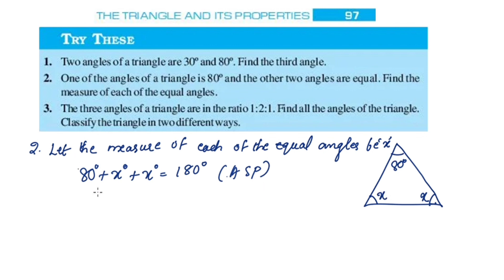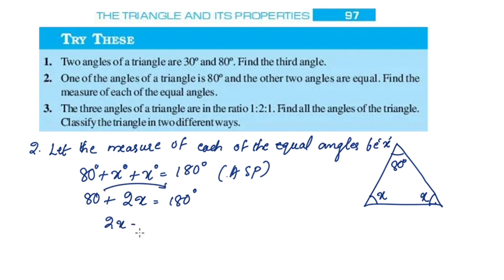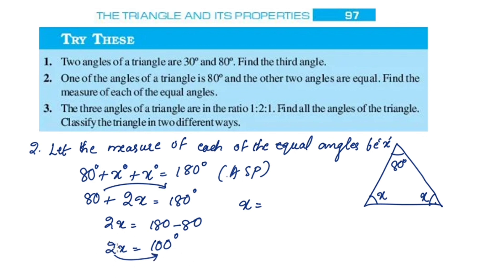So 80 plus x plus x equals 180 degrees. Transposing 80: 2x is equal to 180 minus 80, which is 100. Therefore x is equal to 50 degrees.